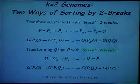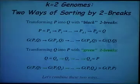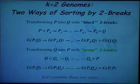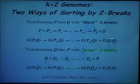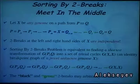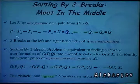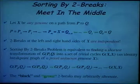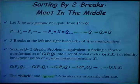To understand how we deal with the multiple breakpoint graph, let us take a different look at how we solve problems for two genomes. If you have genomes P and Q, you can transform P into Q by two-breaks on black edges, or transform Q into P by two-breaks on green edges. Let X be any genome on the shortest path between P and Q. Then we transform P into X by black two-breaks, and Q into X by green two-breaks. An important feature is that black and green two-breaks may arbitrarily alternate, since they affect different objects.